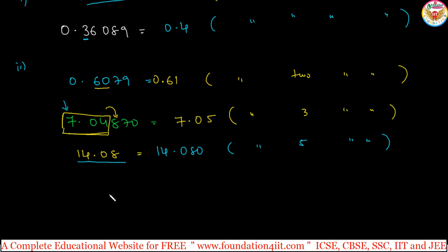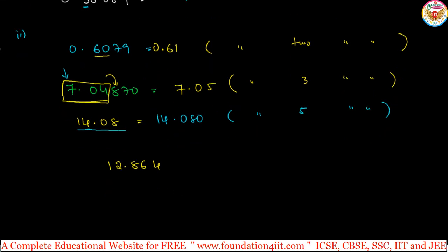Let us see one more example: 12.864. Correct to three significant figures. So first three: that is 12.8. But see this fourth place, it is 6, 5 and above. That means we need to take, instead of 8, we should take 9. So this is corrected to three significant figures: 1, 2, 3.